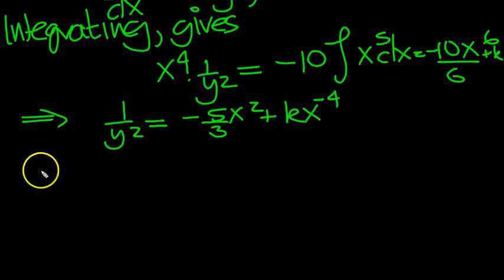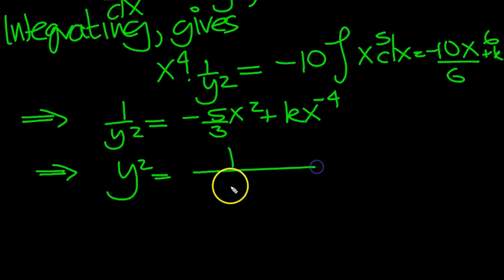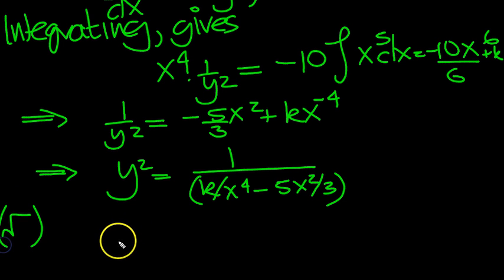Now invert it. So y squared then is going to be 1 over. I'll write this term first. Minus k over x to the 4 minus 5x squared over 3. There we are. Now square root both sides.